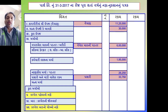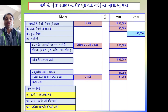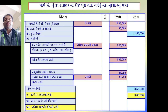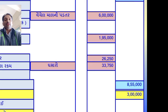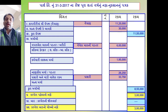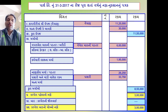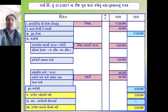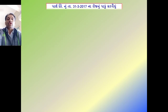જે કરવેરા બાદ નો નફો મળ્યો છે, તેની બીજી અસર પાકા સરવૈયામાં ઇક્વિટી-જવાબદારી બાજુ, અનામતને વધારાના સિર્સક હેઠળ, નફા-નુક્સાનનું પત્રક દર્શાવવાનું રહેશે. હવે આપણે ઇક્વિટી અને જવાબદારી બાજુ તૈયાર કરીએ - સૌ પ્રથમ નમૂનો તૈયાર કરીએ.